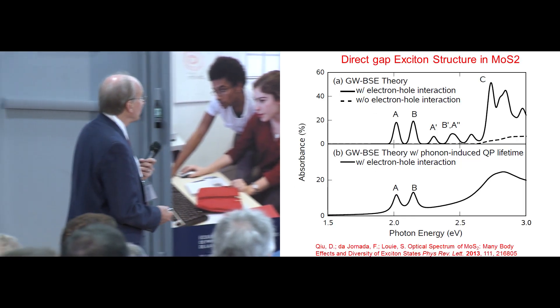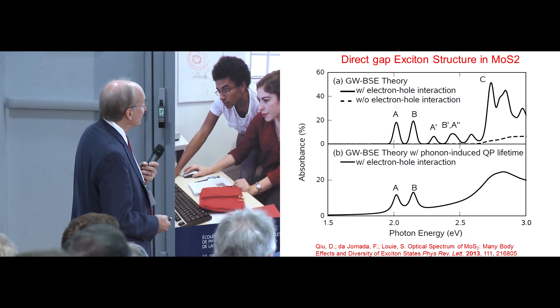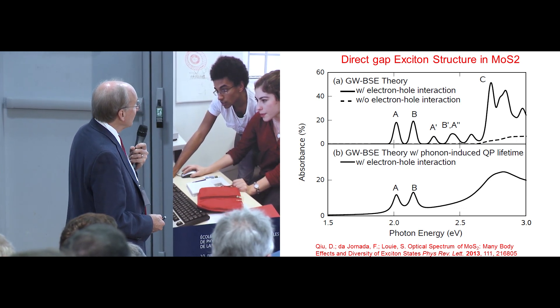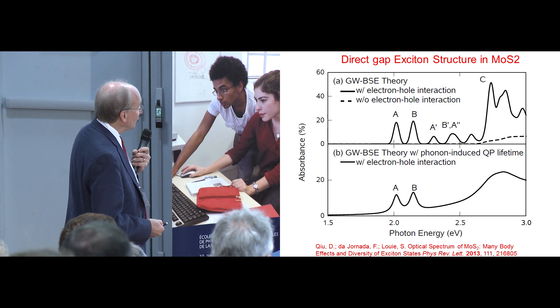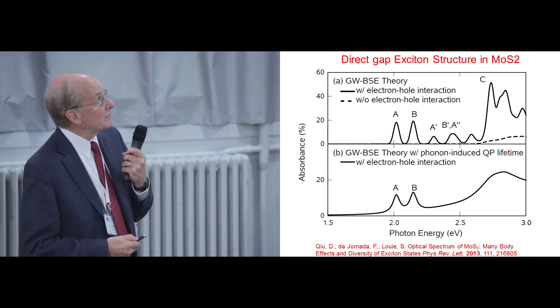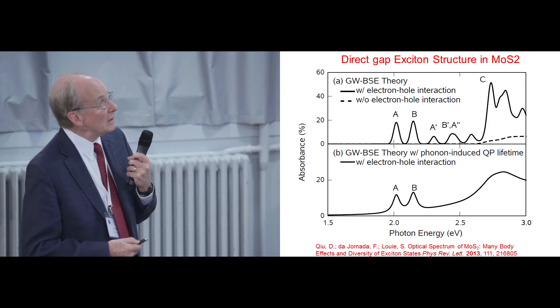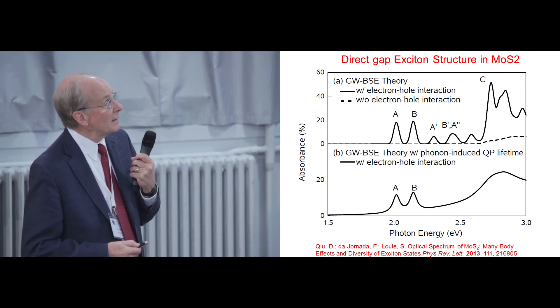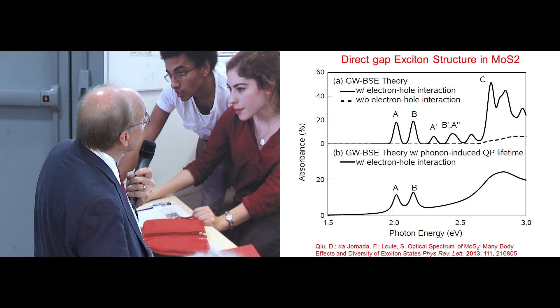So this is the GW theory involving electron hole correlation. This is the absorption spectrum of MoS2 as Louie predicts it to be, with correlation, the black line, and without correlation, just the continuous band theory.